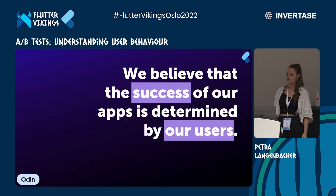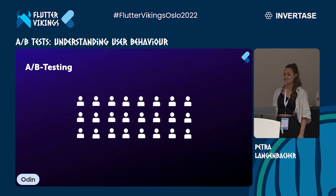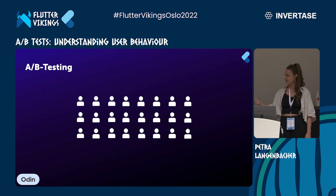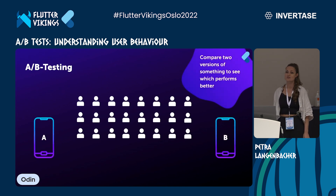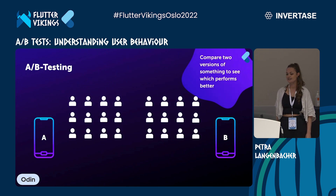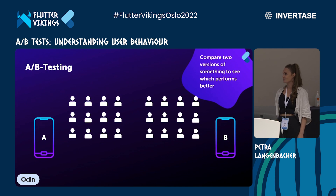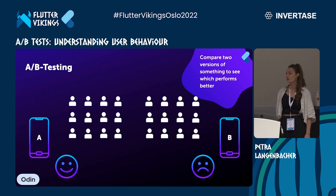That's why A/B testing is a fundamental part of our development process. Now we'll see why you should also consider using A/B tests in your Flutter apps and how to do that. First of all, what is A/B testing? A/B testing is basically comparing two versions of something to see which one performs better. The variations A and B are presented randomly to users — half will see the first version, the other half the second. In the end, we do a statistical analysis to see which version performed better according to predefined indicators.